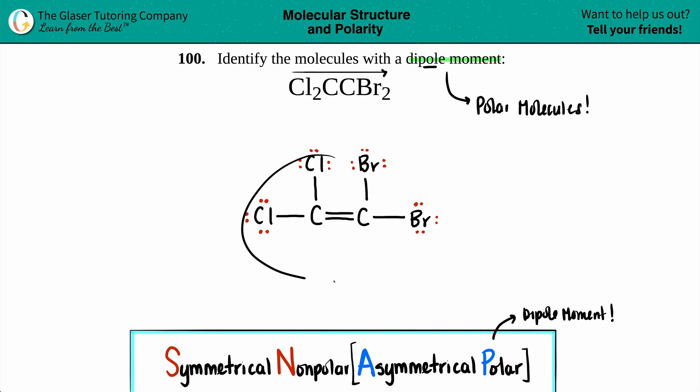Split this down the middle right where that double bond is. On the left side, you have chlorine dominant. On the right side, you have carbons bound to bromine. Are these the same? No, they are not symmetrical. This is asymmetrical.